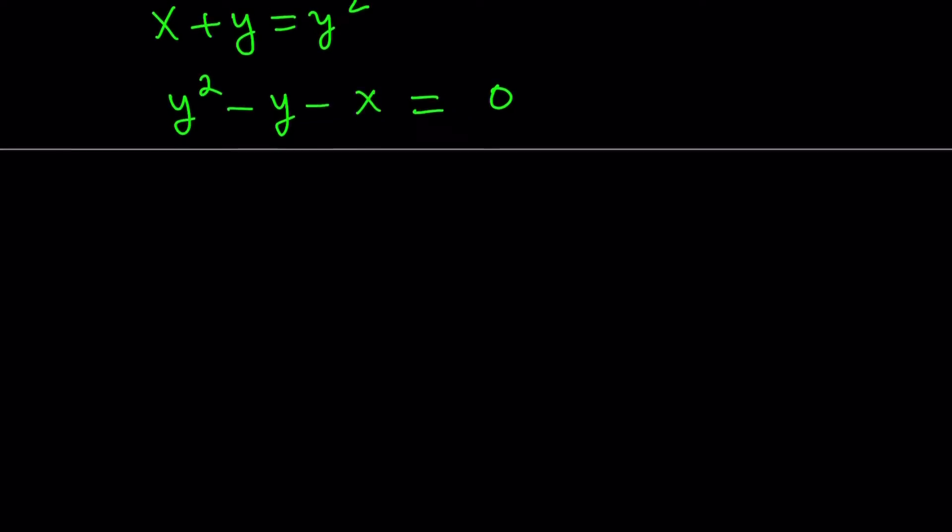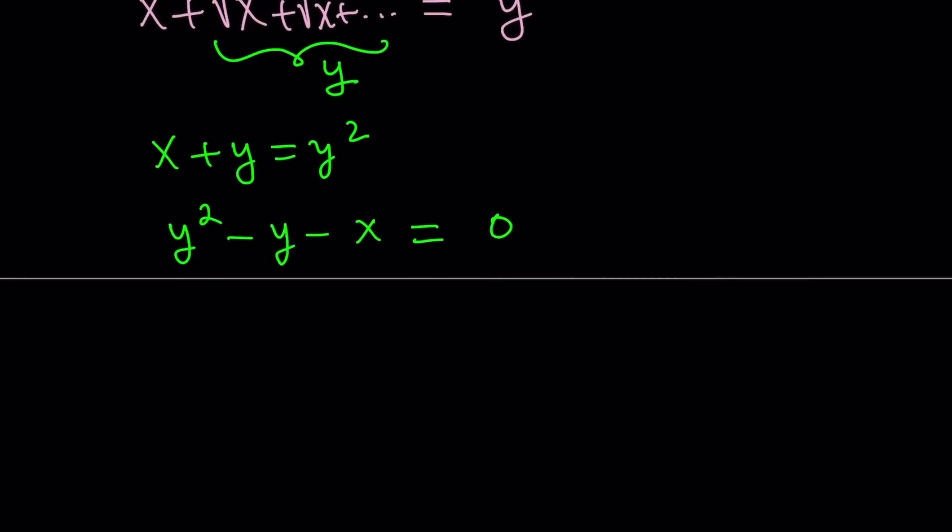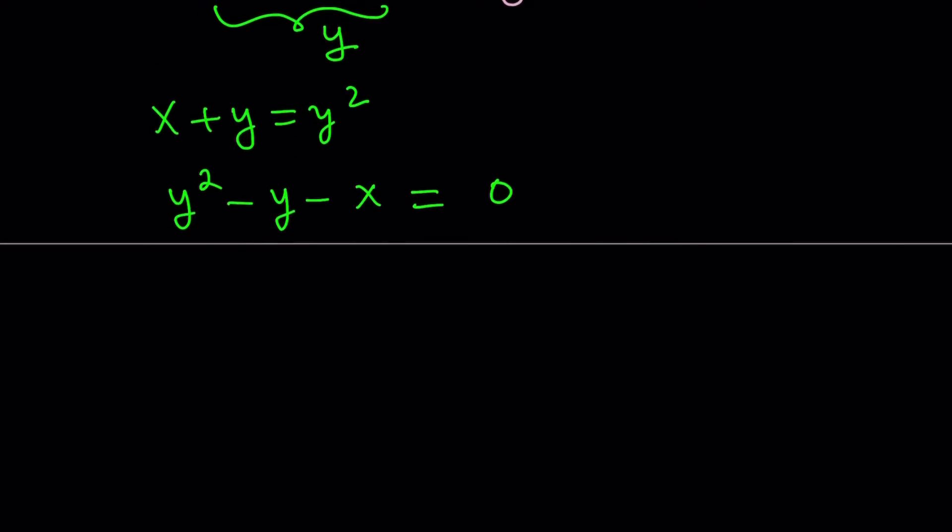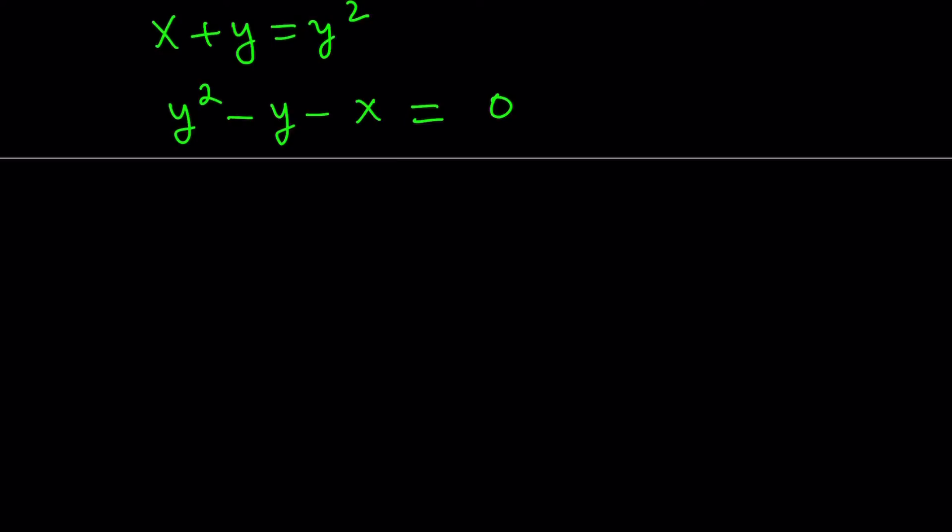And remember, recently we solved a cubic equation using a parametric equation idea. That was the first method. And this is a similar idea. So we're solving for y in terms of a parameter x, so that for different values of x, we get a family of solutions. Okay, great.